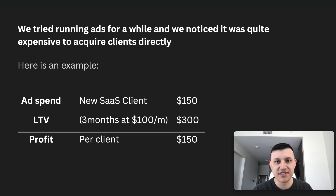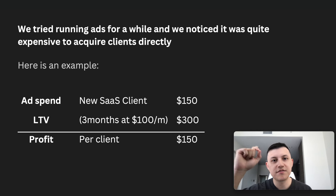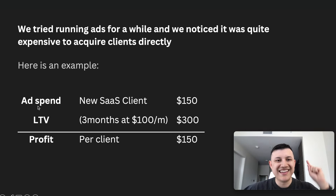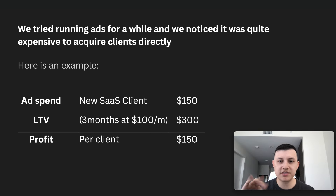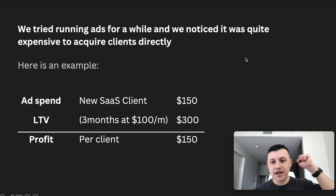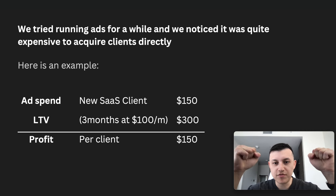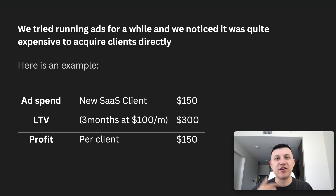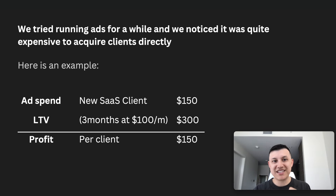When we first started our SaaS agency, we tried running ads and noticed it was quite expensive to acquire clients directly. Imagine you're running Facebook ads and the ad spend to acquire a new client is $150. If the LTV is three months at $100 a month, that's $300 back — meaning you profit $150 for every $150 spent. Month one you're negative $50, month two you profit $50, month three you profit $100 before they churn.